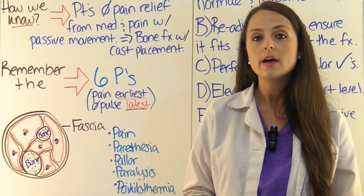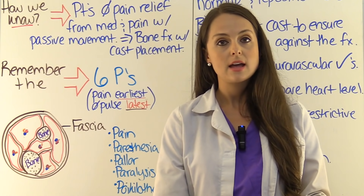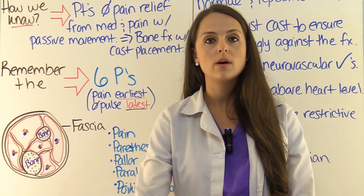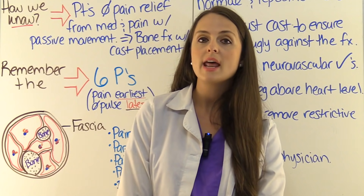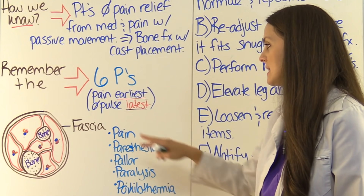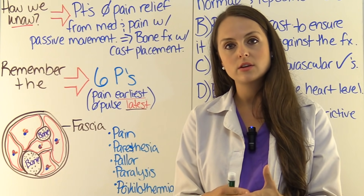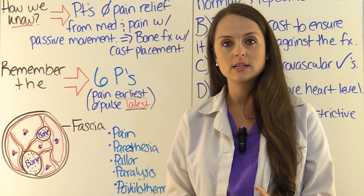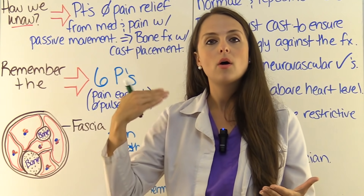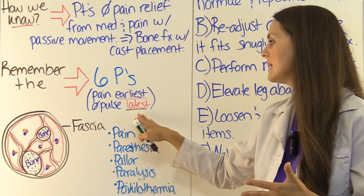Next is paralysis — the patient may not be able to move the extremity. Then poikilothermia: if you feel the distal extremity from the fracture and compare it to the unaffected extremity, you'll feel a temperature difference. The affected side will feel cooler, meaning it's unable to regulate its temperature. And then pulselessness — this is a late sign. If there are no longer pulses, it's very bad. As a nurse, you need to check pulses regularly, mark where the pulse is with a marker so the next clinician knows where to check, and it's best to use a Doppler to assess those pulses by listening for the swishing noise. But again, pulselessness is a late sign.